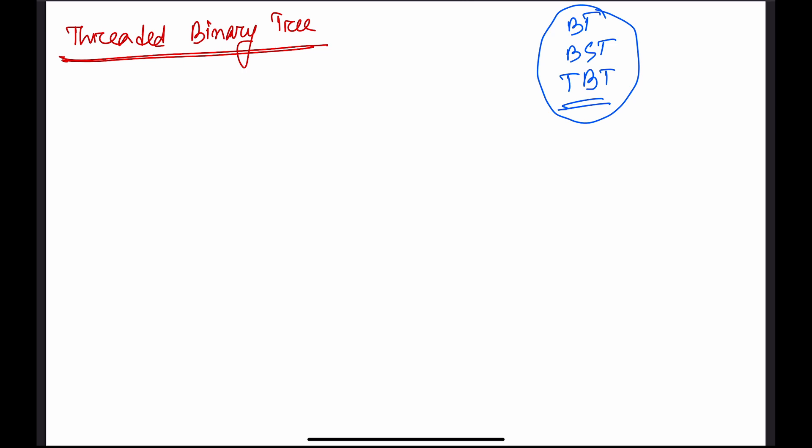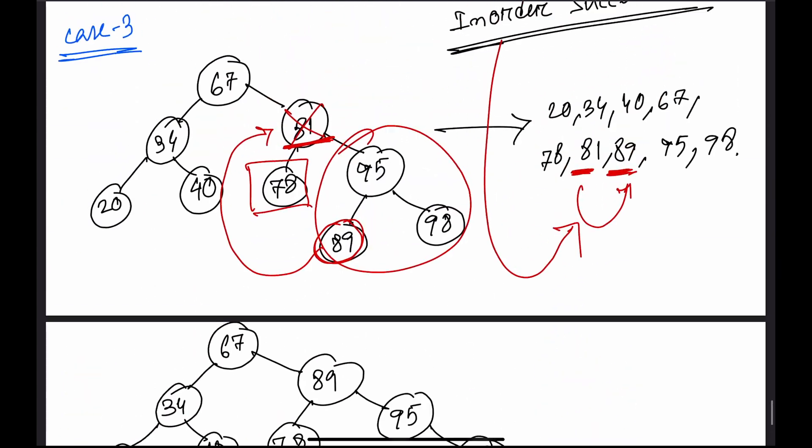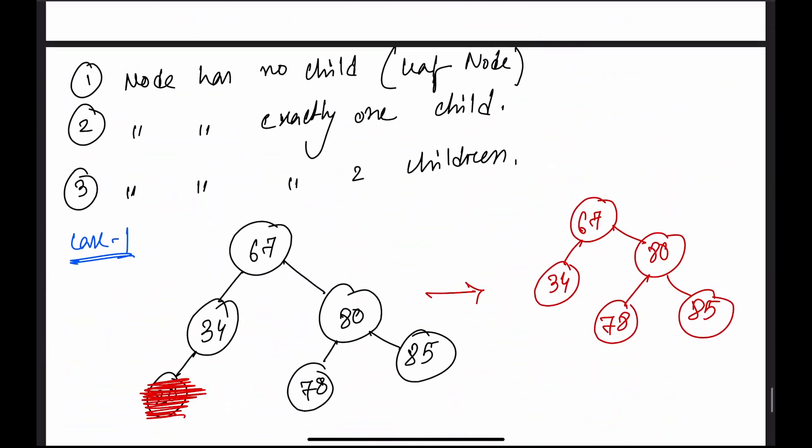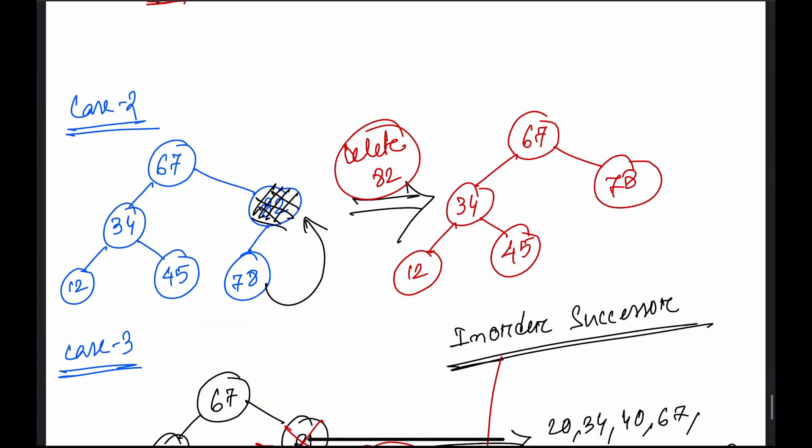First, let me discuss the disadvantages of binary tree — what problems we face while implementing it and why, and how the threaded binary tree concept came about. We have done the traversal of binary tree in two ways: recursive and non-recursive.